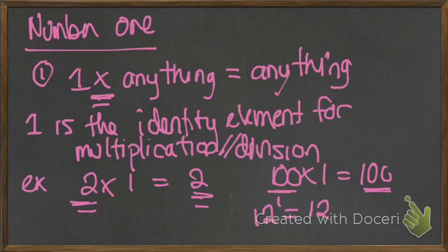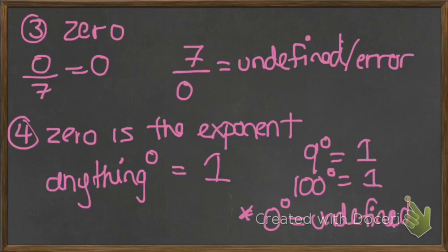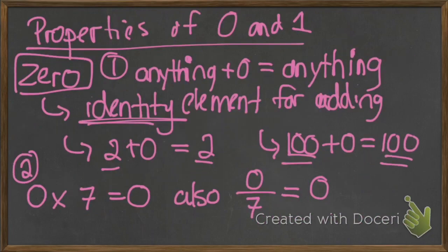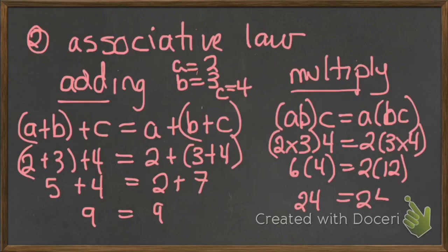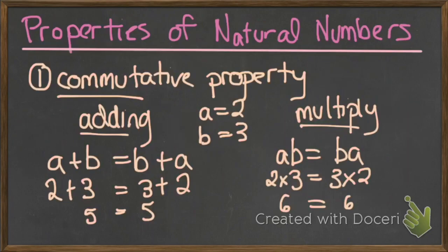That's it for the properties of 1 and 0. I would say that there are a lot more important properties for 0 than there are for 1. And don't forget that we've also covered the properties for numbers, which are the distributive, associative, and commutative properties, or laws.